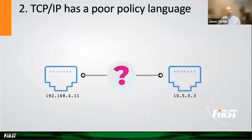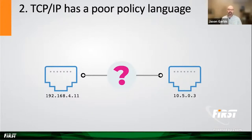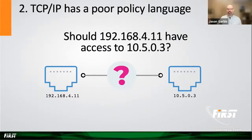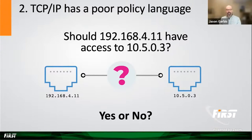Second, TCP/IP — and this is true even in today's most advanced cloud environments — the network security groups or security groups that cloud providers offer really have to fall back on a very impoverished policy language for expressing access control. That language is really just: should this source IP address have access to this target IP address or subnet? And it gives you the ability to say yes or no, allow or block. The reality is that this is a terrible policy model because IP addresses aren't identities. We know nothing about IP addresses — they change, they're shared, and there's no context whatsoever to make this informed decision.